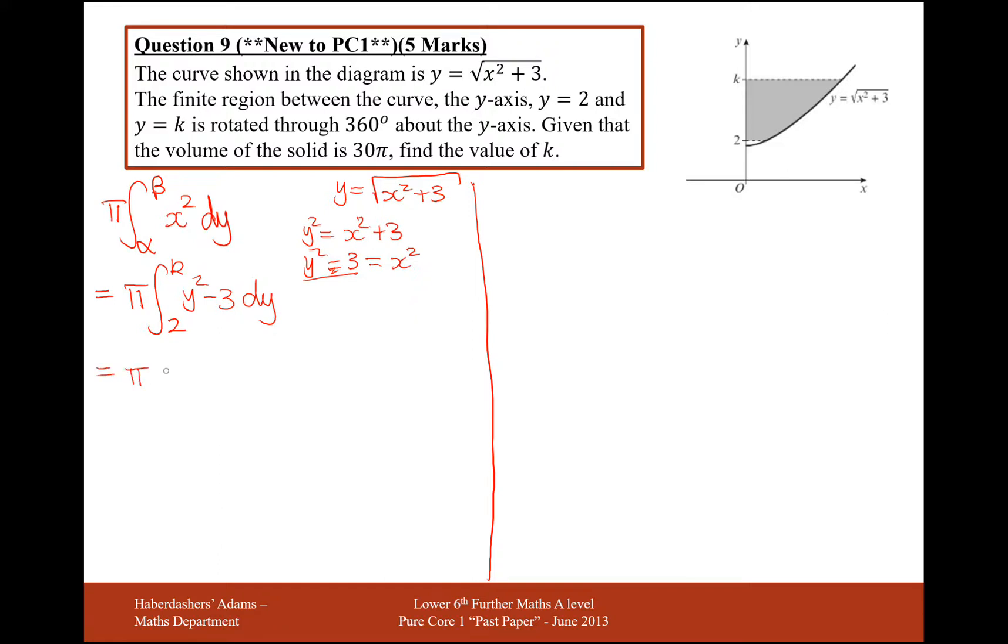And I'm now going to integrate it with respect to y. So this is going to be equal pi times the boundary between... So we're going to integrate it now. So that means we increase the power by one and divide by the new power. So increase the two to a three and then divide by that three. We have a y zero here, so increase that zero to a one. So three y to the one and then divide by one. And then it's going to be in between k down to two.